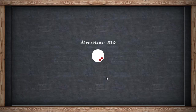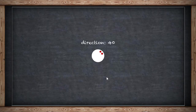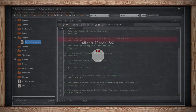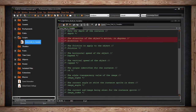Like depth, direction is both read and write, which means you can get the value of direction and use it for other functions or variables, or you can specifically write to it in your code — something like direction equals 90 — to set the direction or facing of your instance.